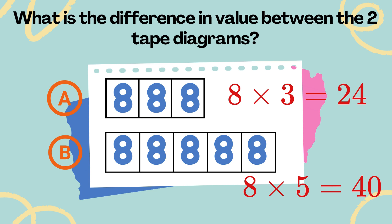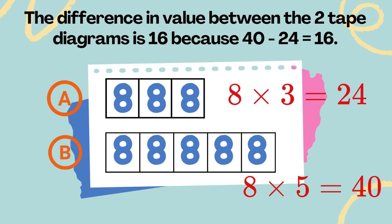What is the difference in value between the two tape diagrams? The total value of tape diagram A is 24. The difference in value between the two tape diagrams is 16 because 40 minus 24 equals 16.